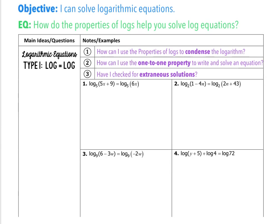The extraneous solutions we're really going to deal with is that a log cannot be negative. So I can never have a log that is a negative. If I end up with that as my solution, and I plug it back in, and I end up with log base 4 of negative 12, I know that that is no solution because I cannot have a negative log. Make sure you write that down and remember that the log can never be negative.